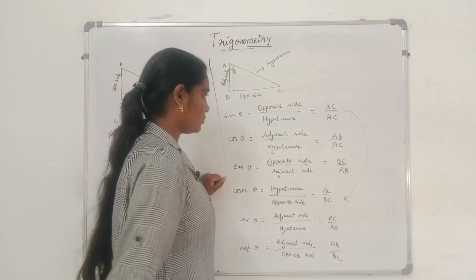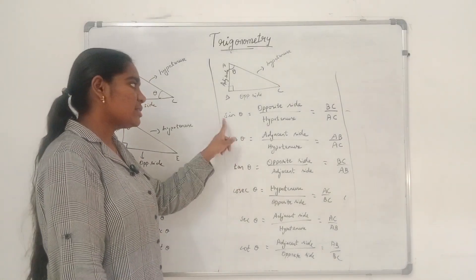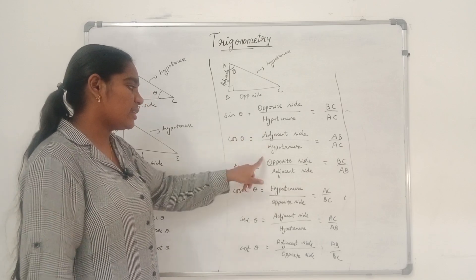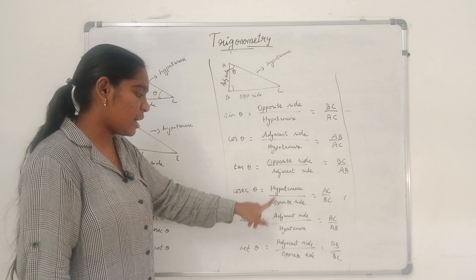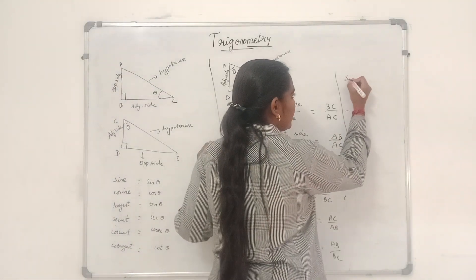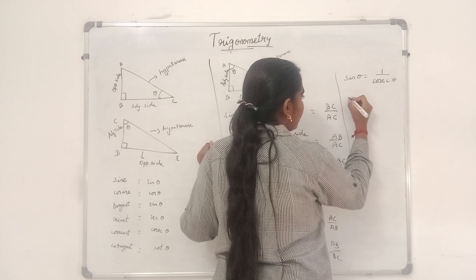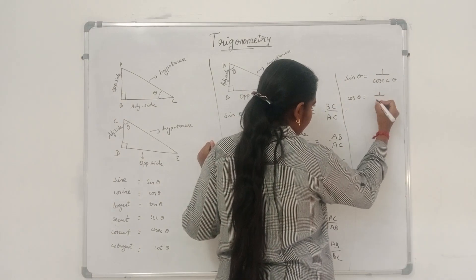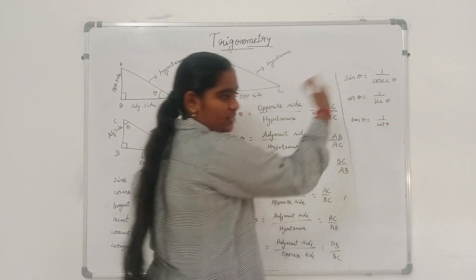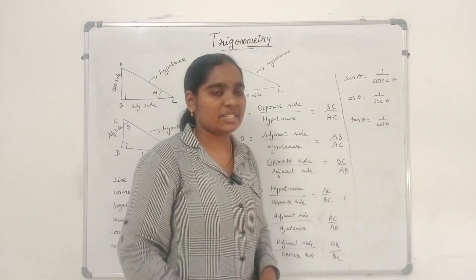These are the basic six trigonometric ratios. Sin theta is opposite side by hypotenuse, cos theta is adjacent side by hypotenuse, tan theta is opposite side by adjacent side. Cosecant is reciprocal of sine, secant is reciprocal of cosine, and cotangent is reciprocal of tangent. These pairs are reciprocals of each other.